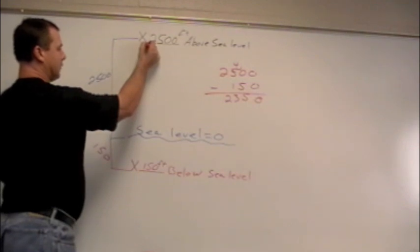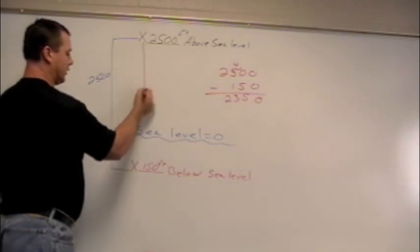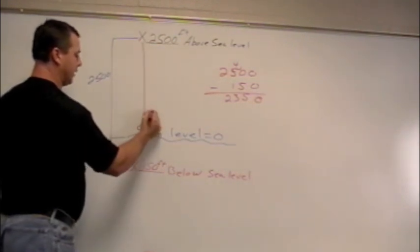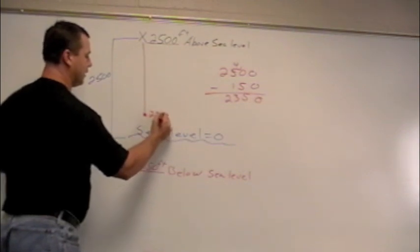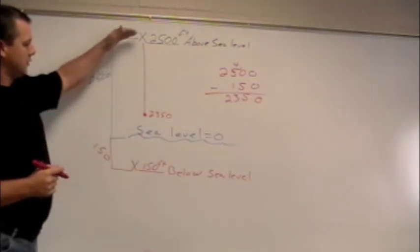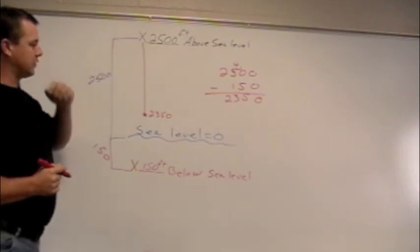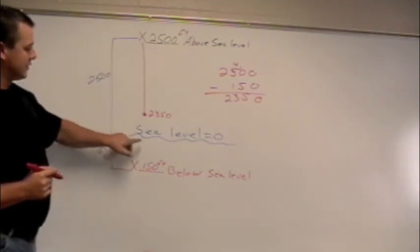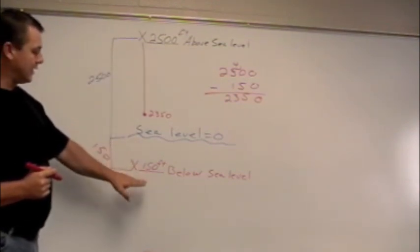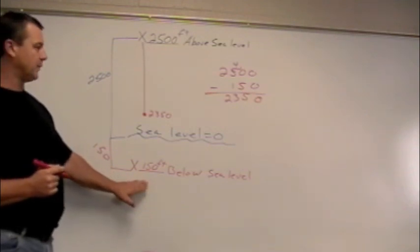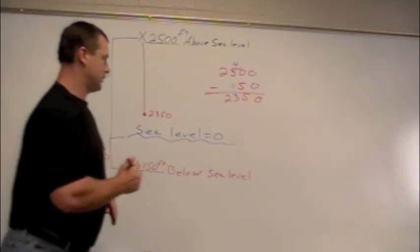Well, if I went down from here, I'd end up about right here. That'd be about 2,350 feet from our starting distance. Well, that doesn't even get to sea level, much less 150 feet below sea level. So let's try to add the two numbers together.